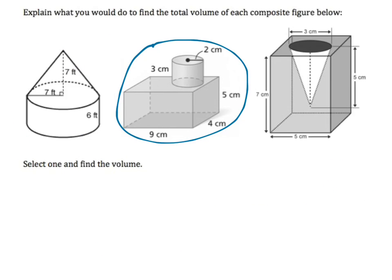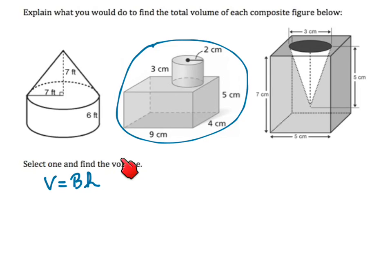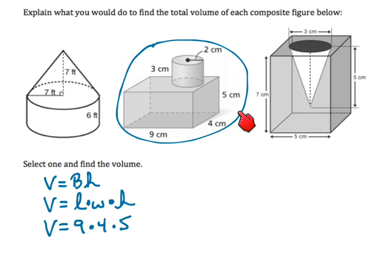Let's figure out this shape. Volume of a rectangular prism — remember, as long as the base stays the same shape straight up, we can say base times height. The base is length times width, so volume equals length times width times height. Volume equals 9 times 4 times 5 — length times width times height — so volume equals 180 cubic centimeters.